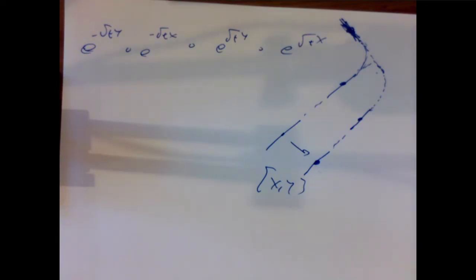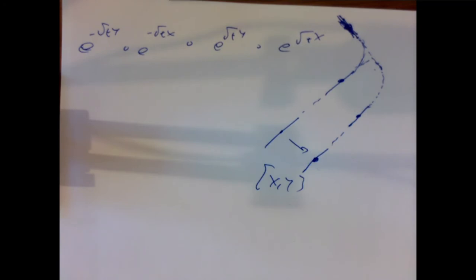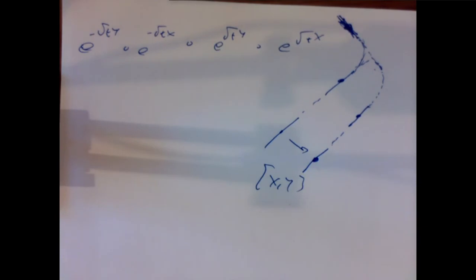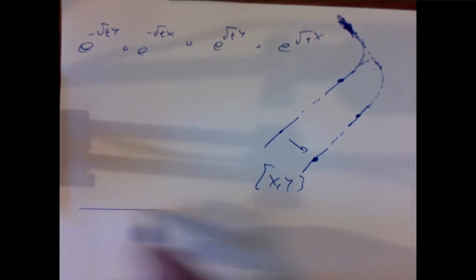This gives a serious example where vector fields don't commute — the bracket [X, Y] is not zero, and indeed the flows don't commute. So what happens when they do commute? Can we generalize the flow box theorem?